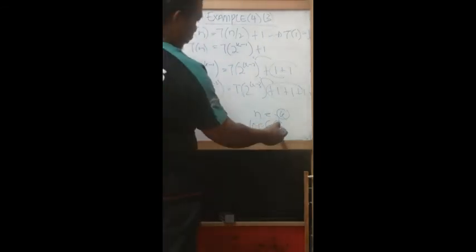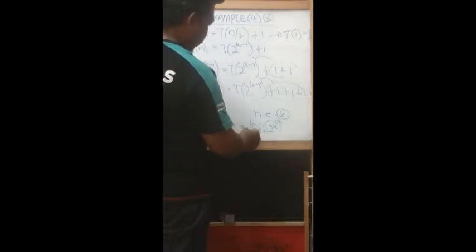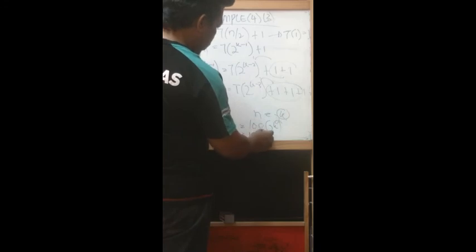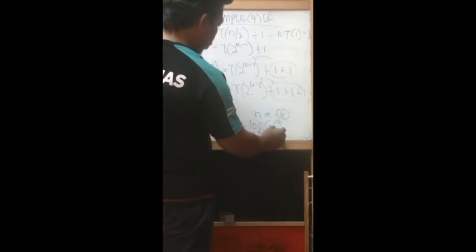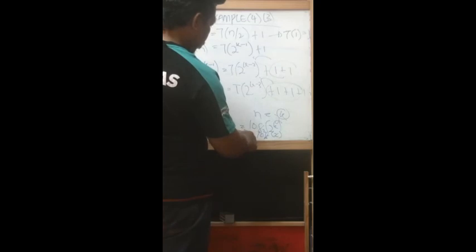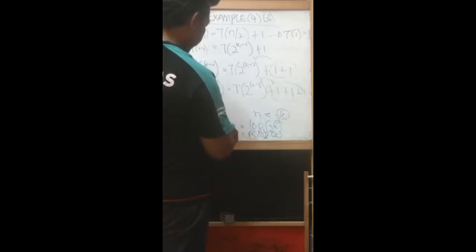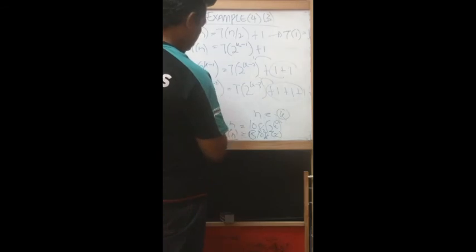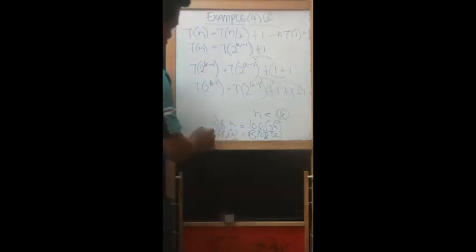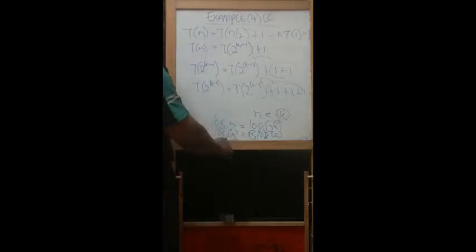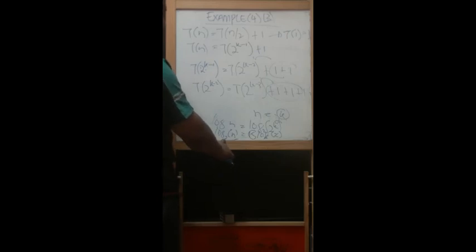We put log n in for k, and we also apply log to n so that we have the same form. We bring back k equals log n base 2. So we can conclude that this algorithm ends up with log n — that is, the time complexity is O(log n).